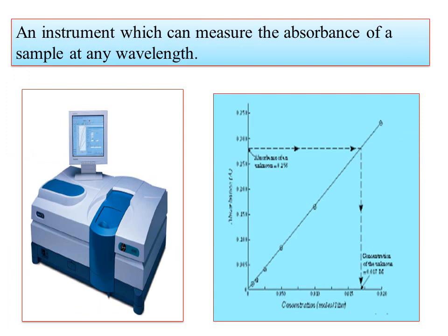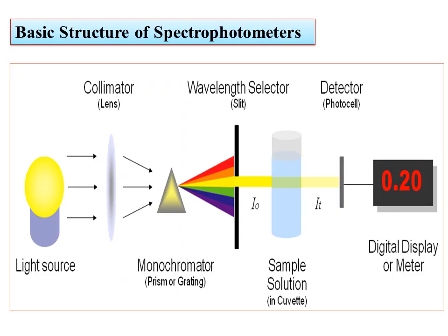We are going to plot concentration versus absorbance, keeping the length of the tube constant. We use the instrument to identify the concentration of an unknown substance from its absorbance at any point. At the end, we are going to get the results in the form of a spectrum.